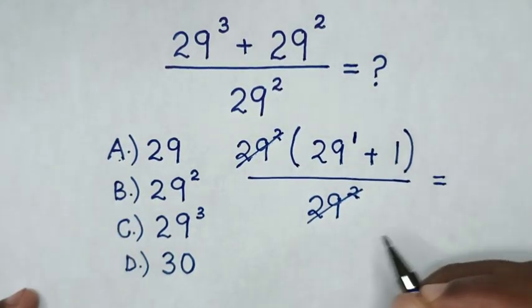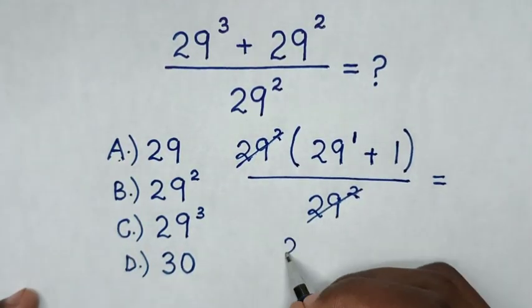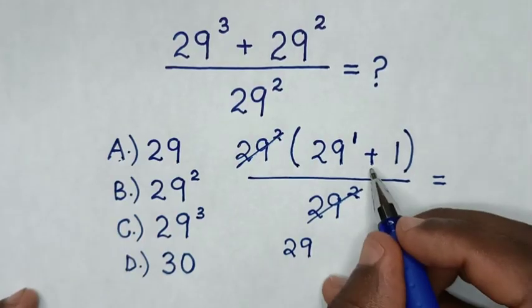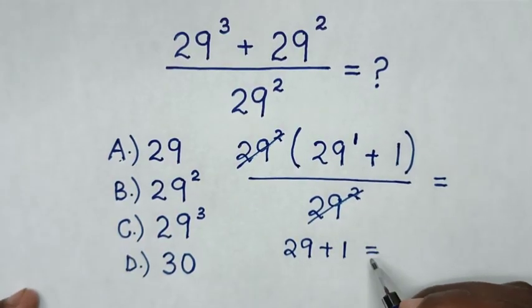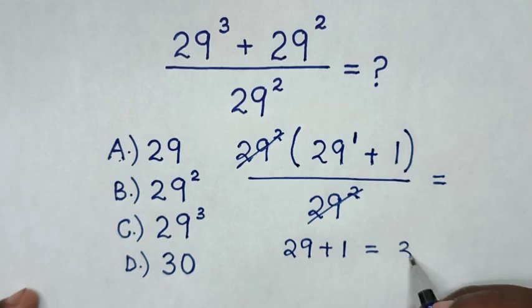So it will be equal to 29¹, which is the same as 29, plus 1. Then it equals 29 + 1, which is 30.